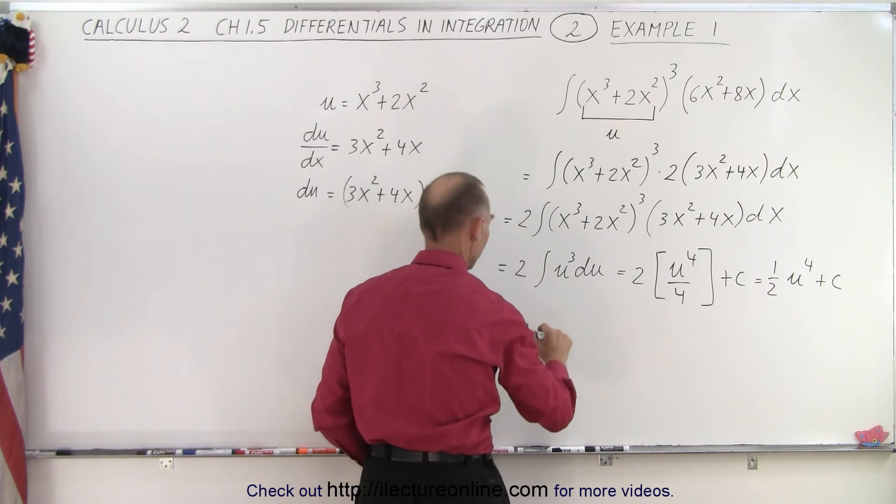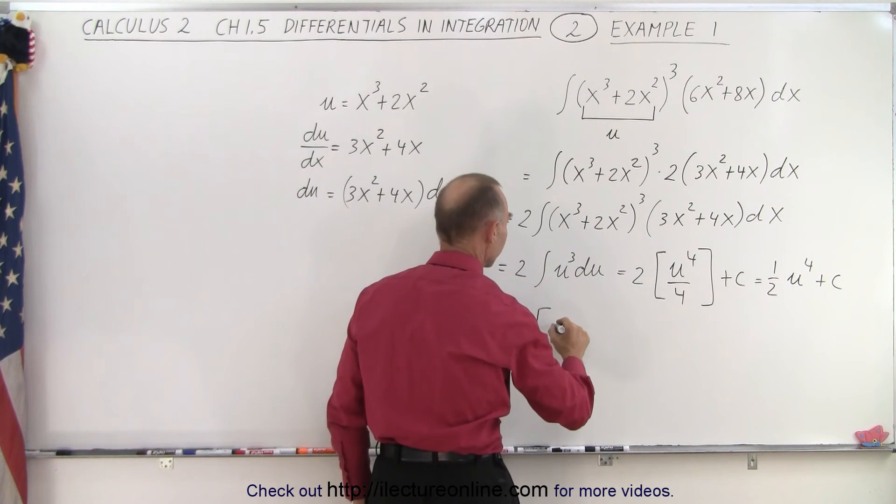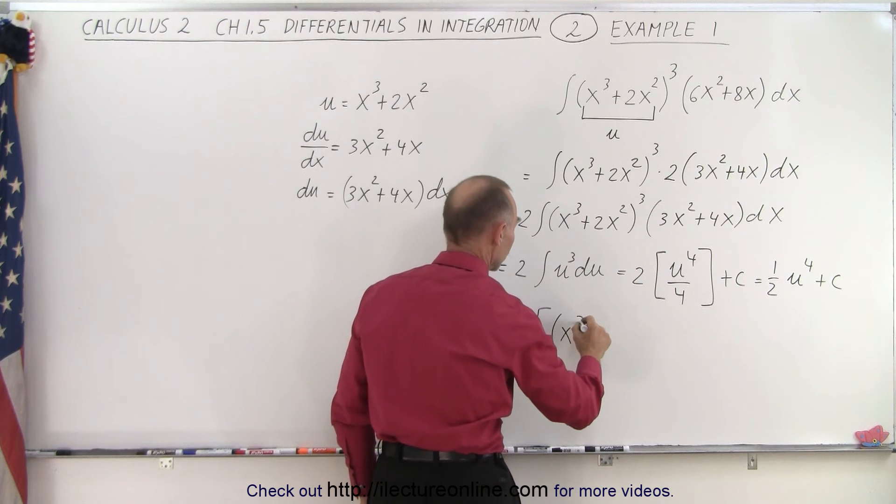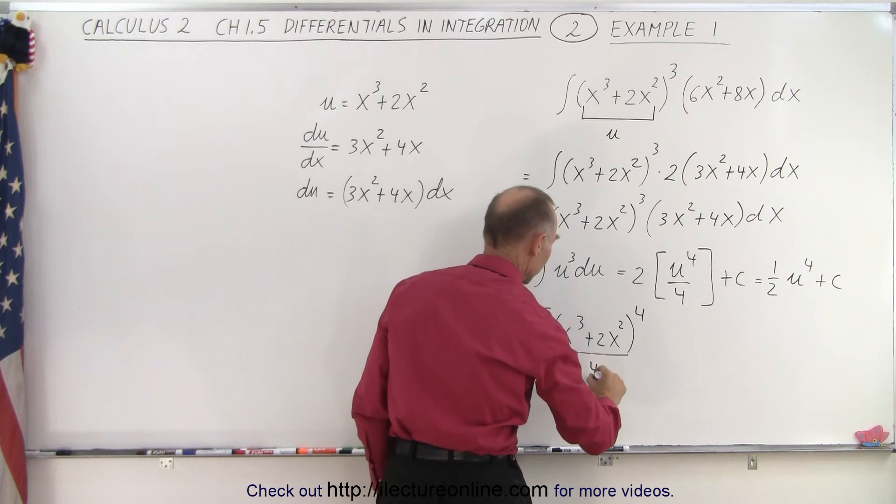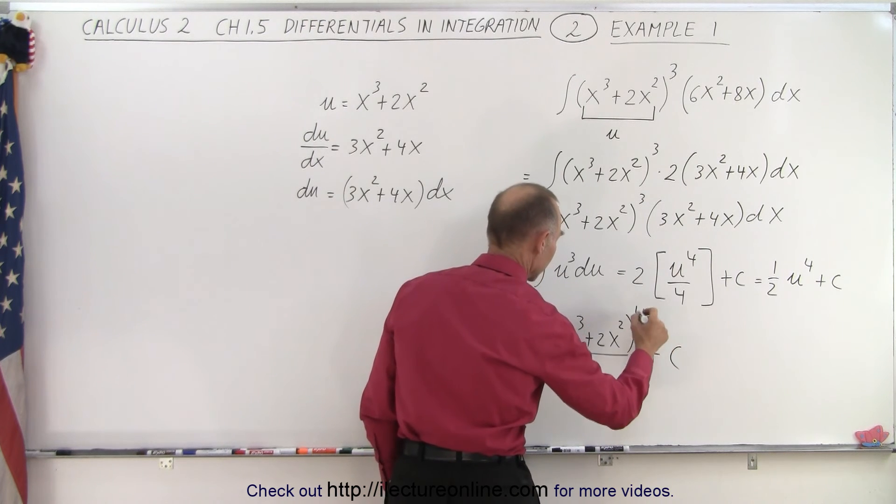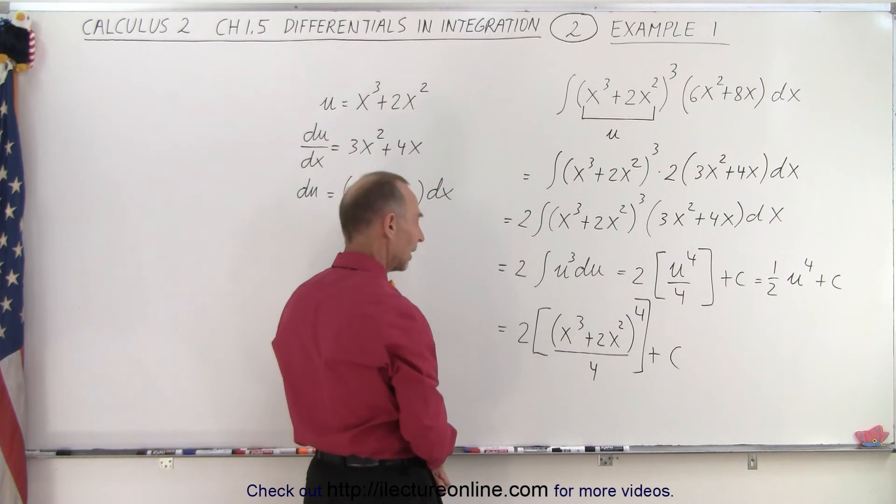So this becomes 2 times the quantity (x³ + 2x²) to the fourth power divided by 4 plus a constant of integration. Of course I need a bracket like that.